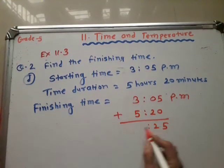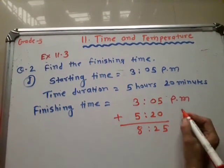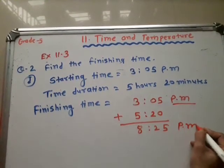5 plus 20, 2 and 3 plus 5, we get 8. Means we get the answer 8:25. And this is PM, so you have to write PM.